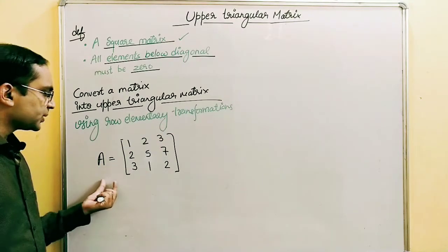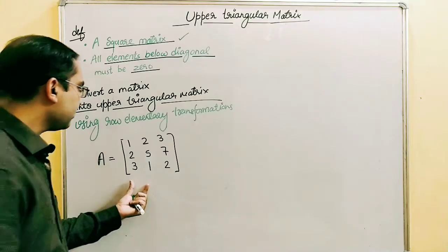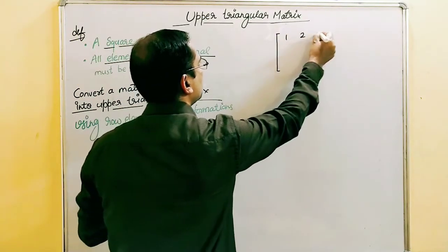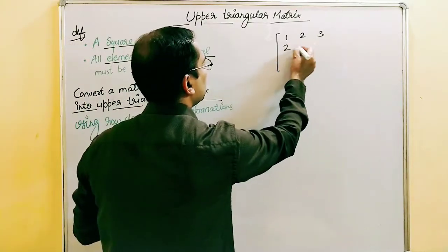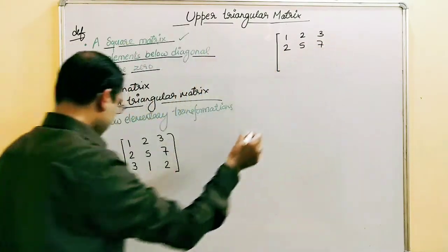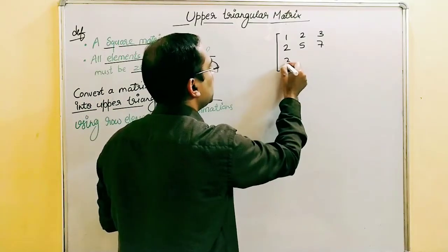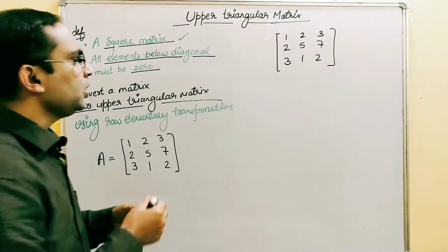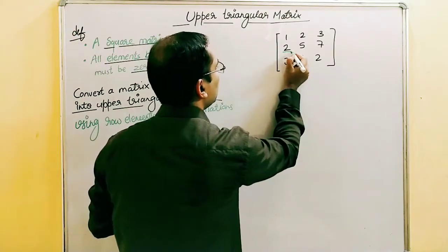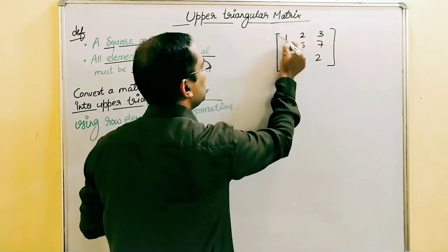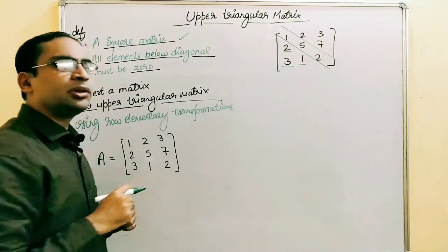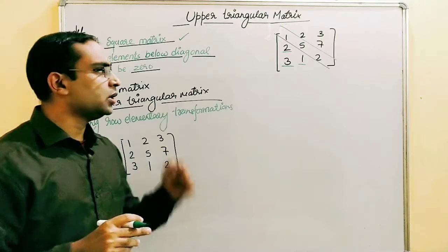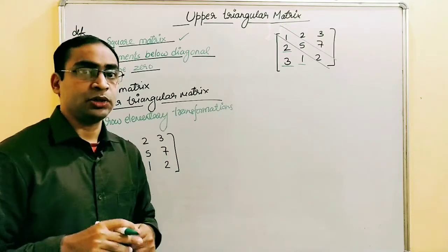Now let's see how we can convert a matrix into an upper triangular matrix using row elementary transformations. Let's say matrix A is: [1, 2, 3 / 2, 5, 7 / 3, 1, 2]. We need to convert this into an upper triangular matrix, meaning we want the three elements below the diagonal — positions (2,1), (3,1), and (3,2) — to become zero.